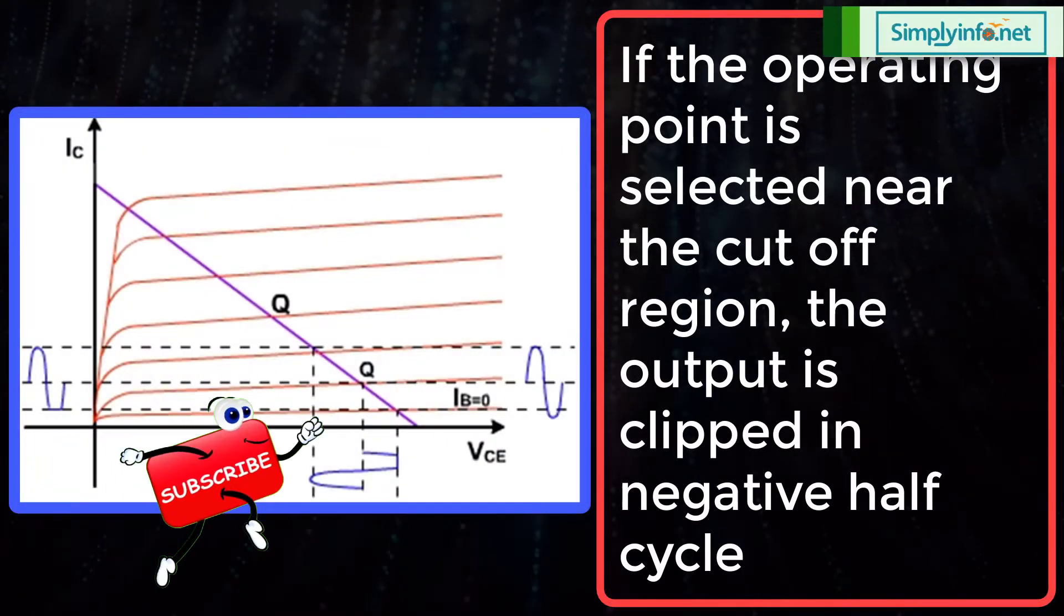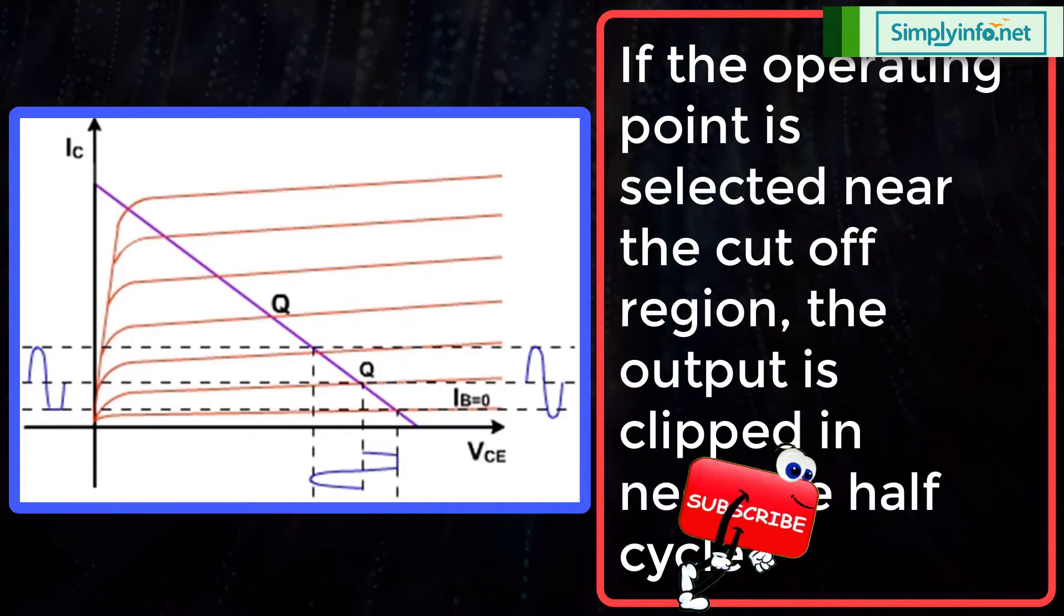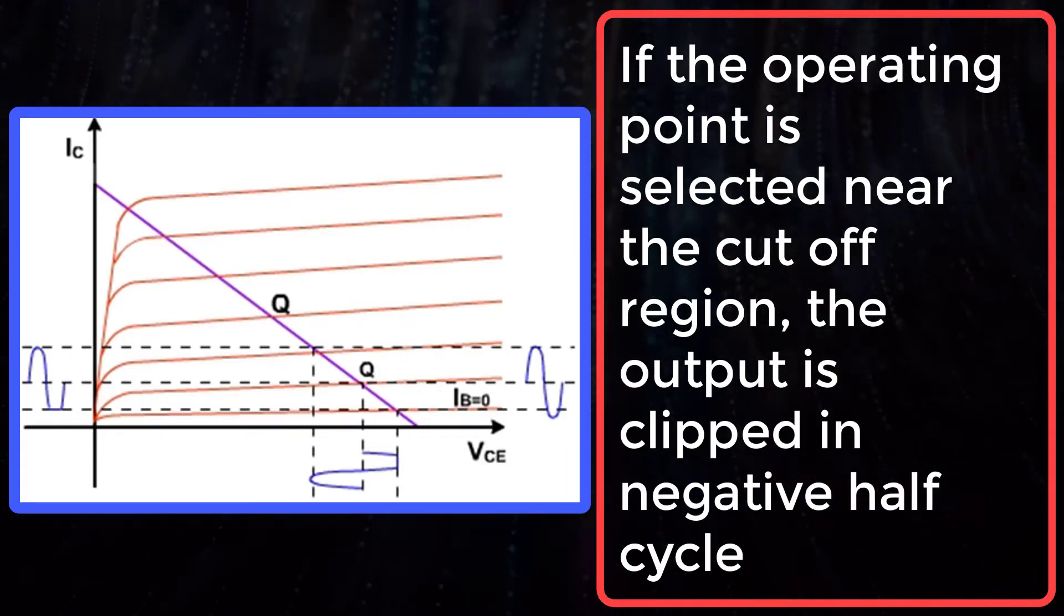If the operating point is selected near the cutoff region, the output is clipped in negative half cycle as shown here.